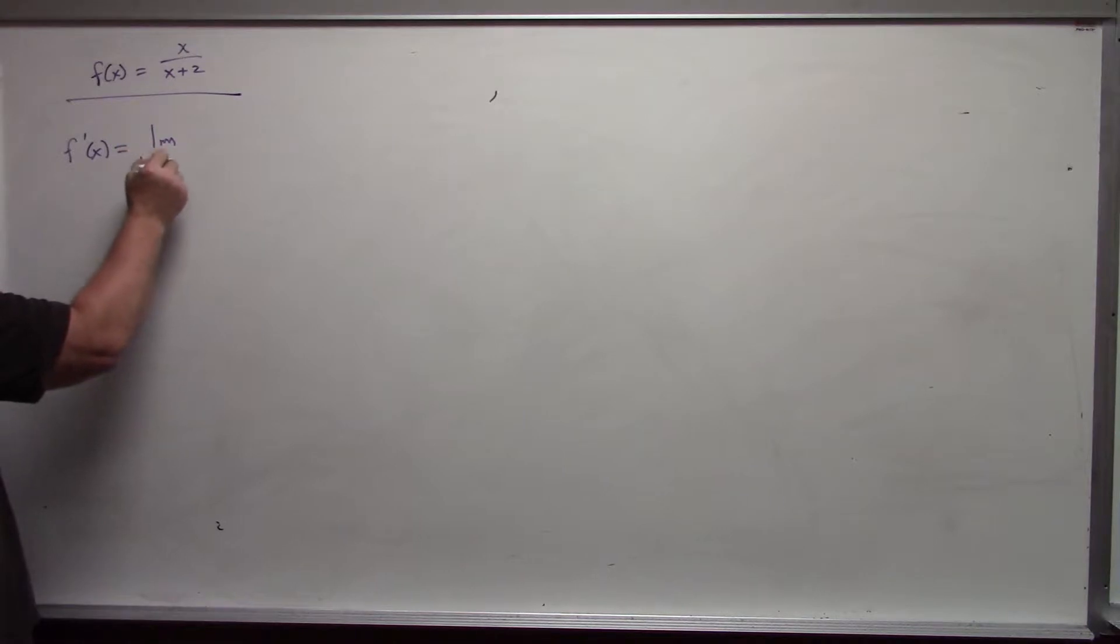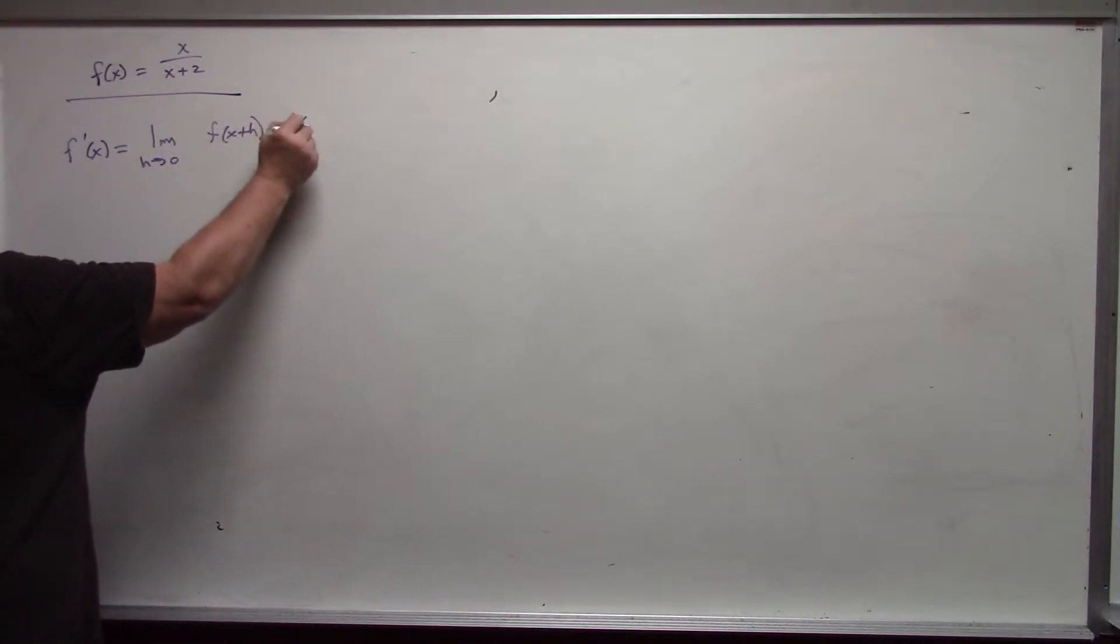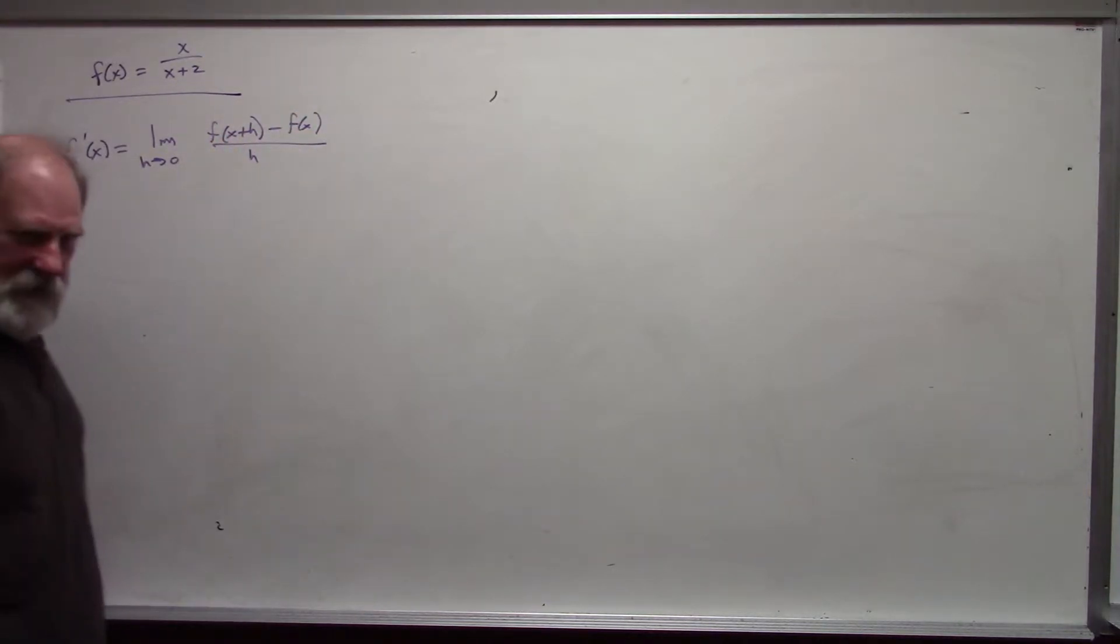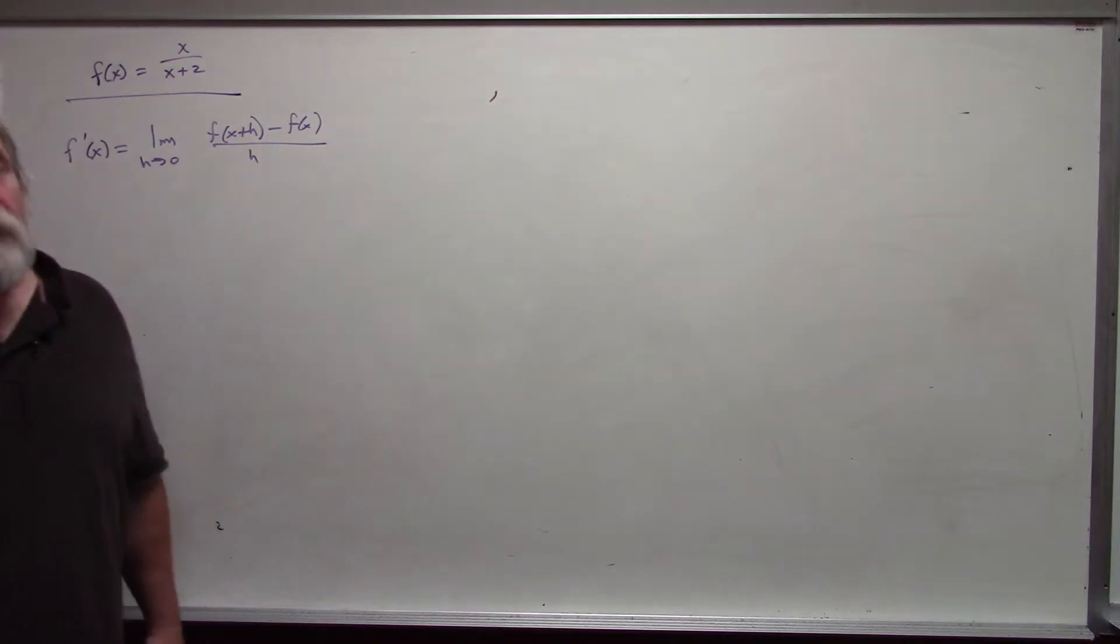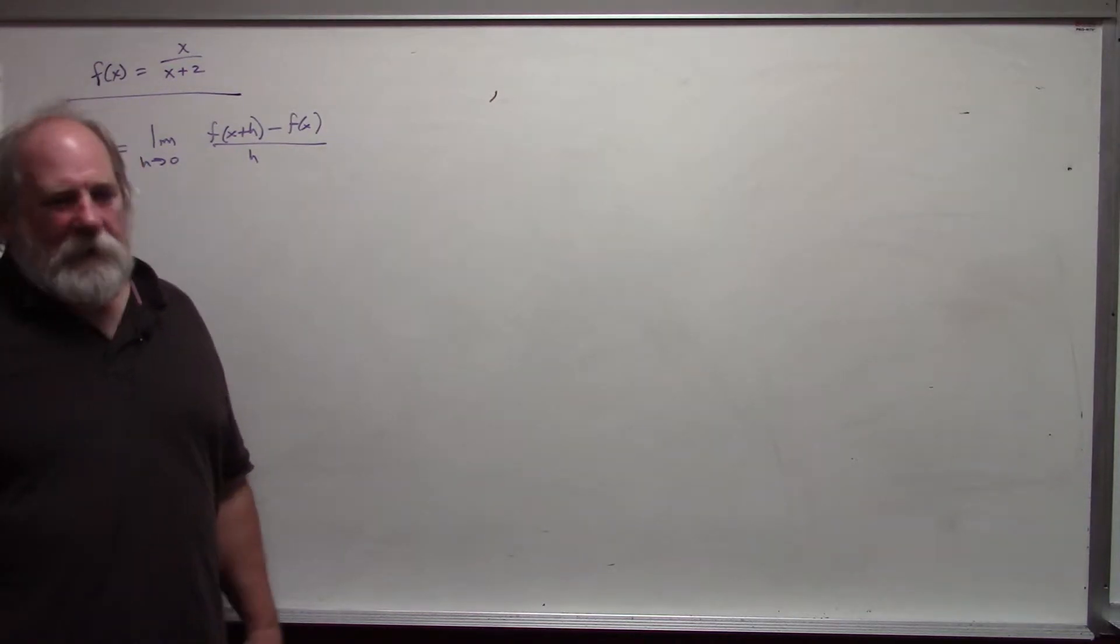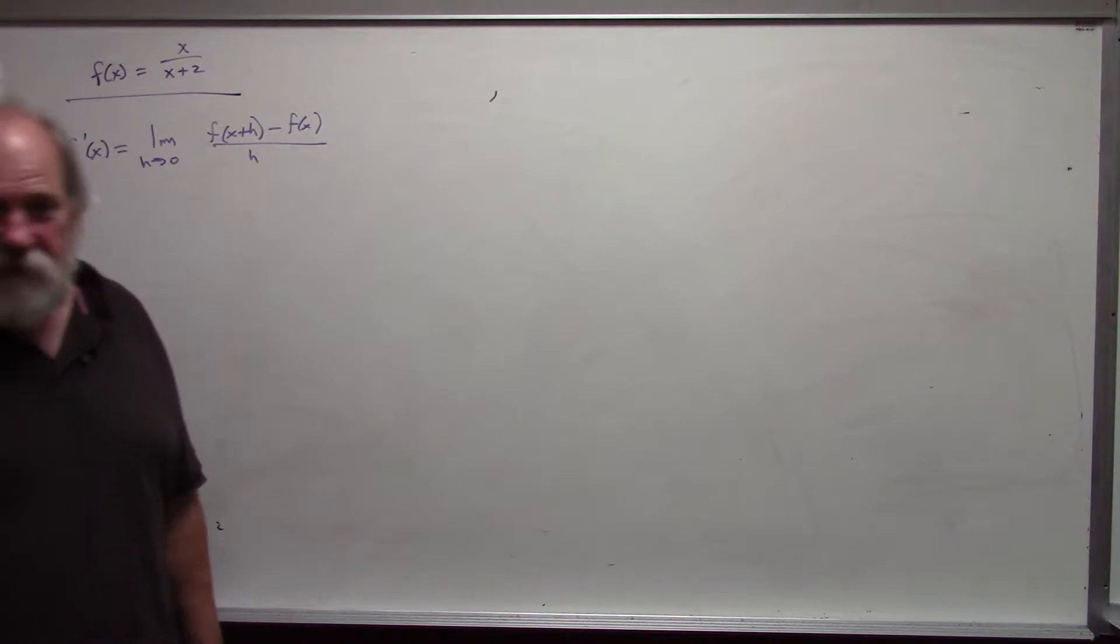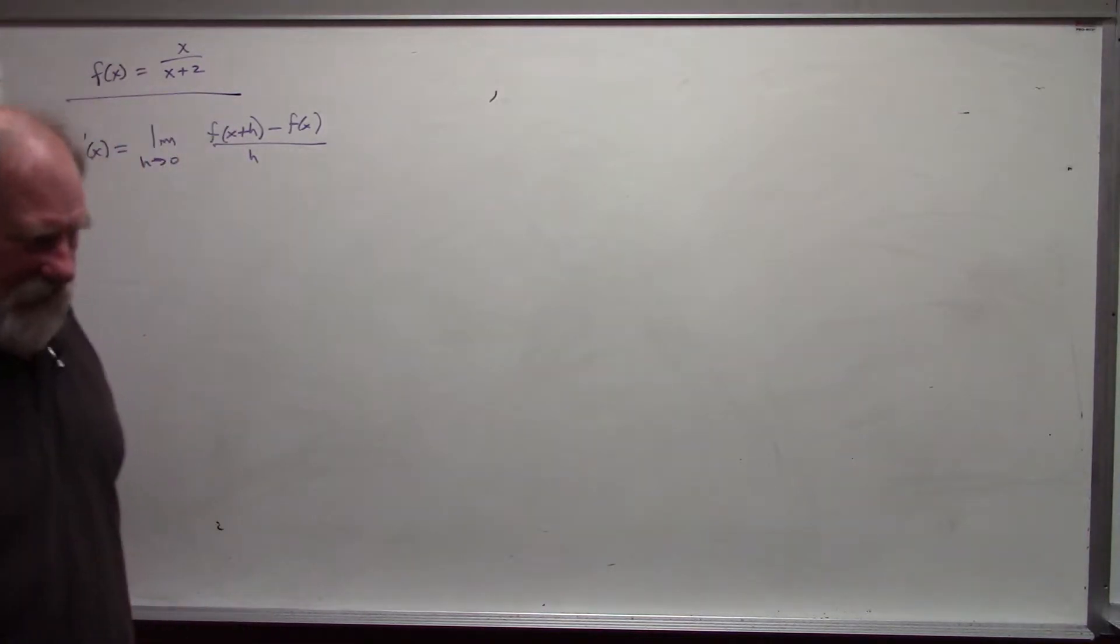And let's suppose that my function is f of x equals x over x plus 2. So, f prime of x is the limit as h approaches 0, f of x plus h minus f of x divided by h. By the way, this is one of the specific limit applications that you saw in one of the previous videos. All of those represented derivatives.